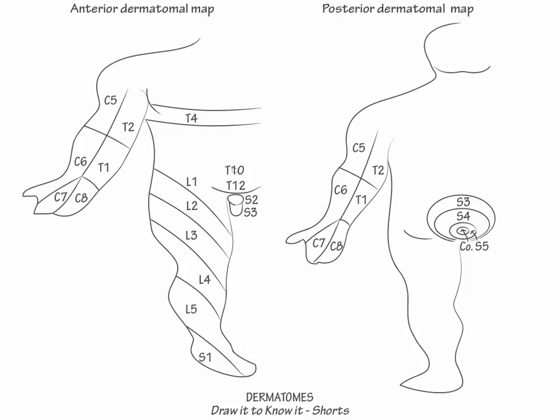S2 also extends down the posteromedial lower limb. And lastly, show that S1 extends down the posterolateral limb and covers the Achilles.